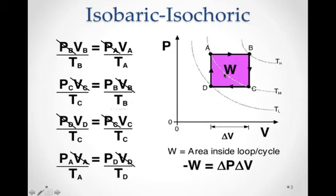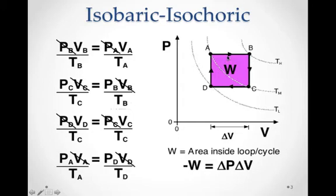That positive work subtracts from the original negative work, leaving a net negative amount. From D to A there's no work either, since there's no change in volume. The net work is the work from A→B minus the work from C→D. You can find it by computing the area within the loop: the change in pressure times the change in volume. The work is negative because the top process — increasing volume — is larger than the lower process decreasing volume.